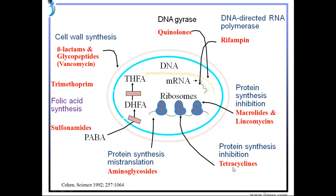Tetracyclines act by inhibiting protein synthesis; they act on the 30S part of the ribosome, while macrolides and lincosamides act on the 50S part of the ribosome. Another important antituberculosis drug is rifampicin, which acts on DNA-directed RNA polymerase, thereby inhibiting mRNA synthesis and inhibiting bacterial growth. Another important group, the quinolones, act on DNA gyrase enzyme, which inhibits replication of the genetic material in bacteria.